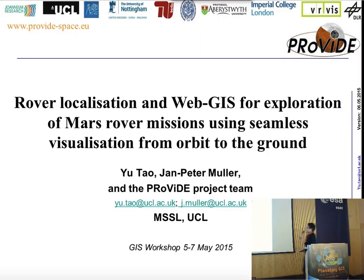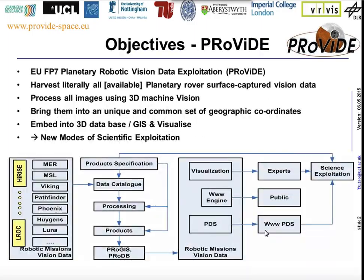Hello, I'm presenting a rover localization work performed in the ProVide project, which you have probably noticed from yesterday. My colleague Michaela from University of Nottingham demonstrates the project too, and Robe from Imperial College London, and Irina from Russia, a colleague from McGill. ProVide aims to collect and process all surface rover mission data into unique and common geographic coordinates and embed it into a 3D viewer and Web GIS.